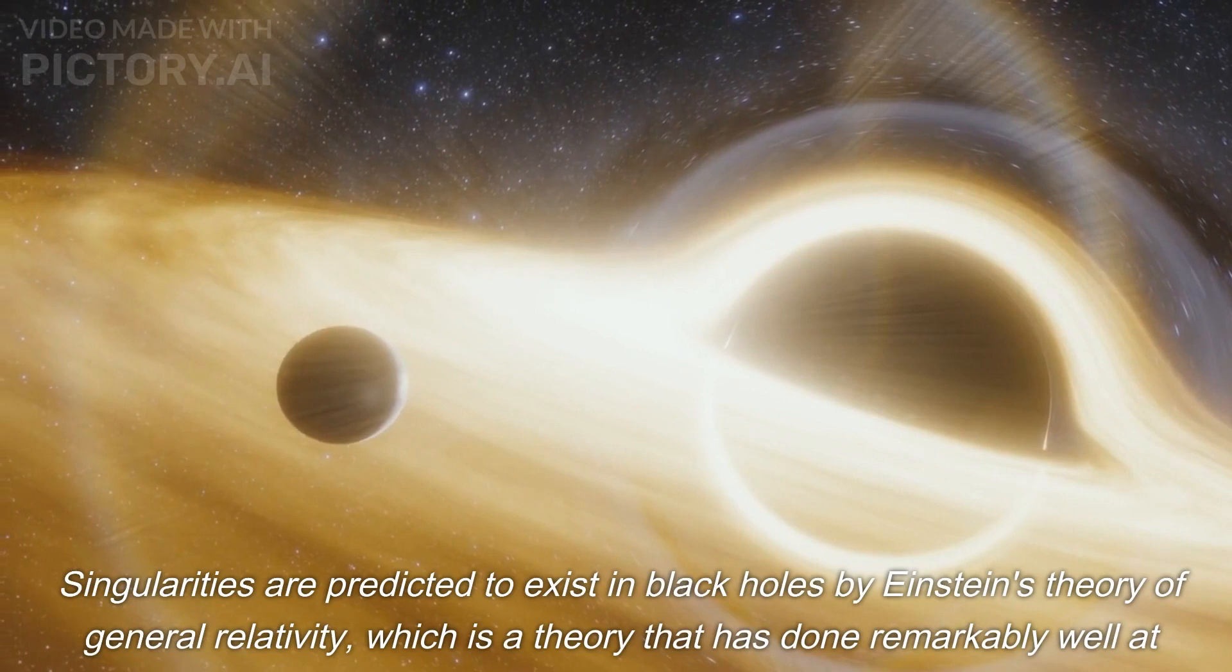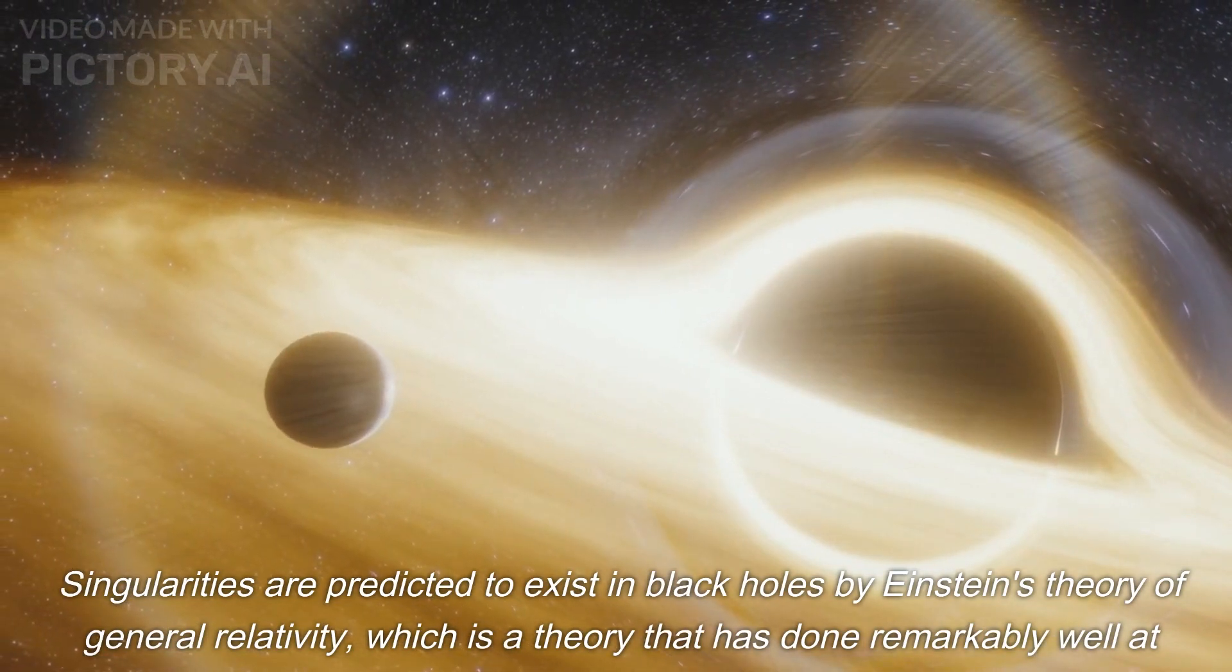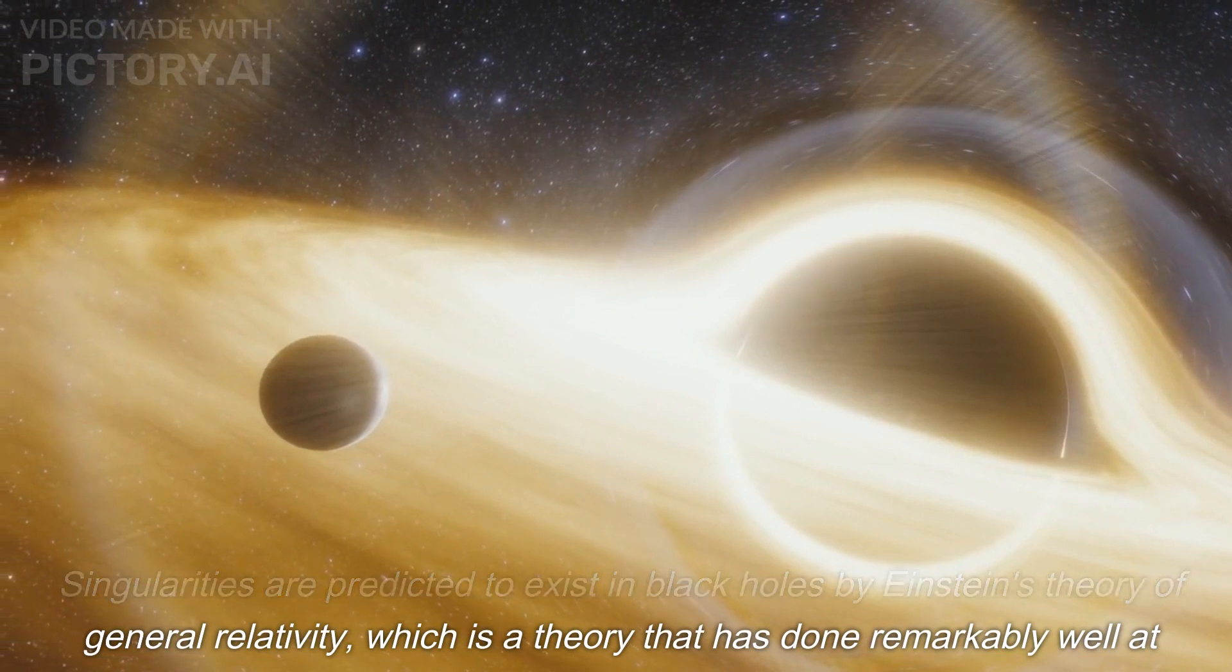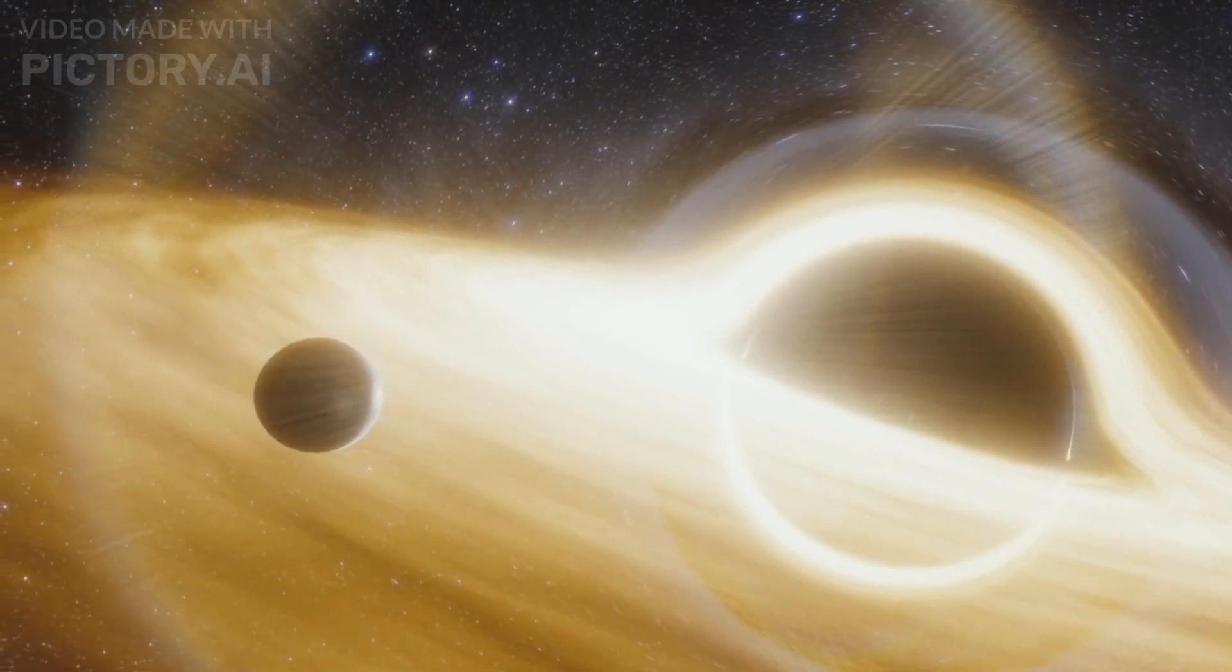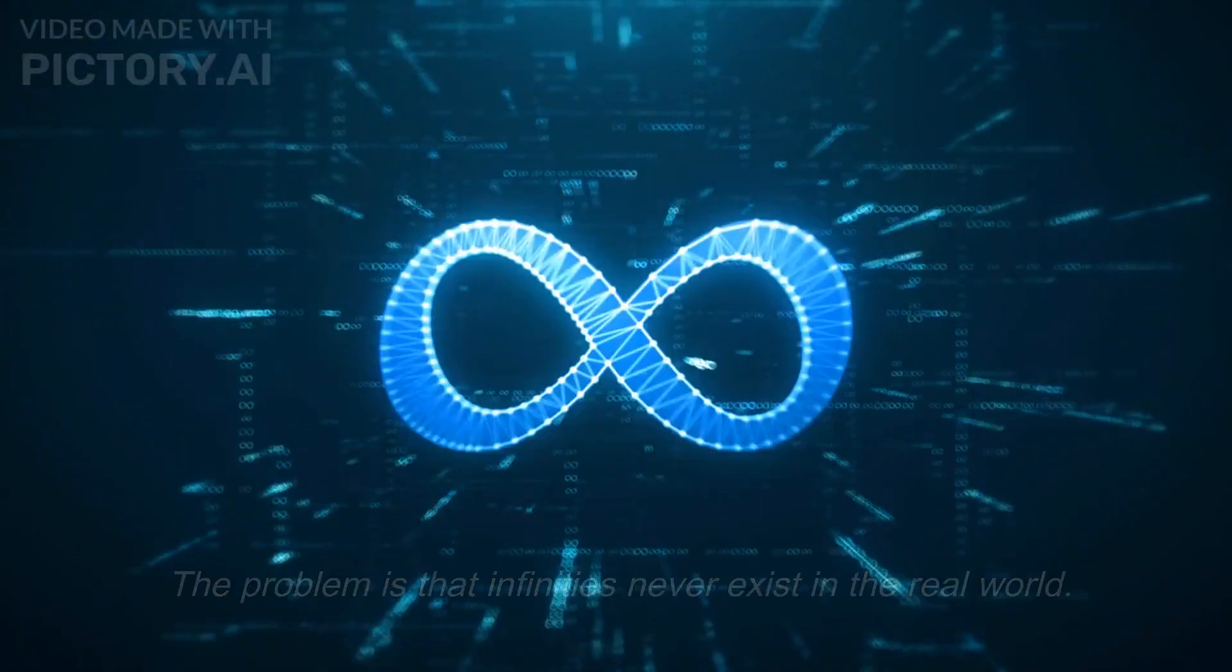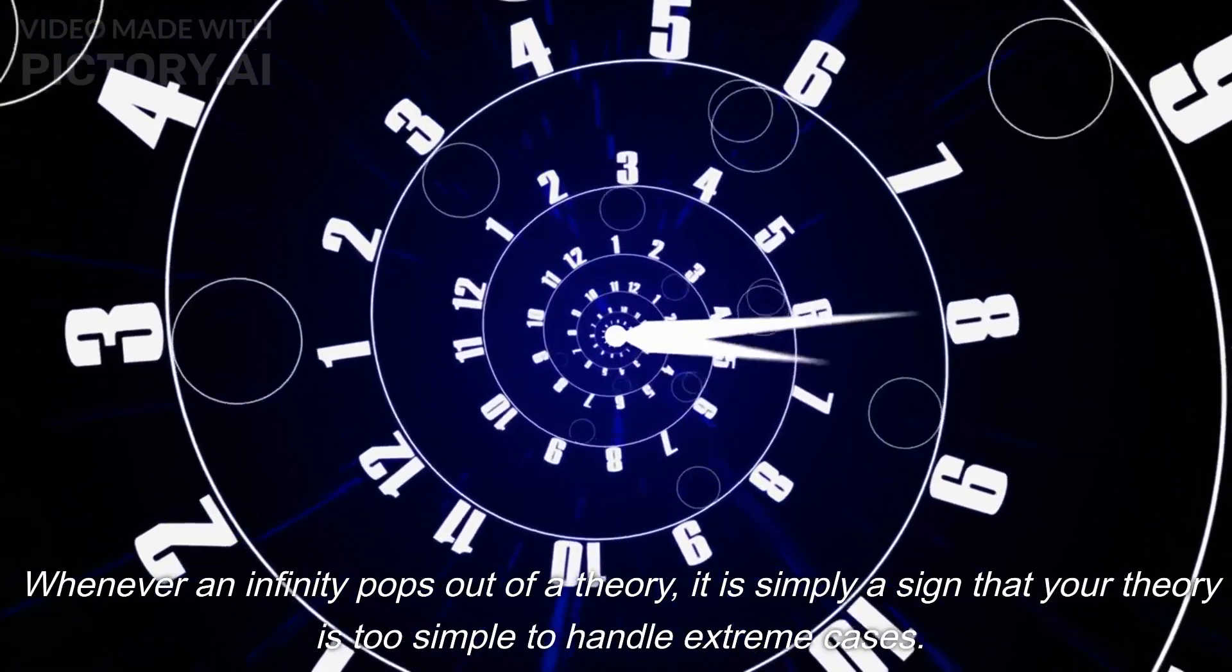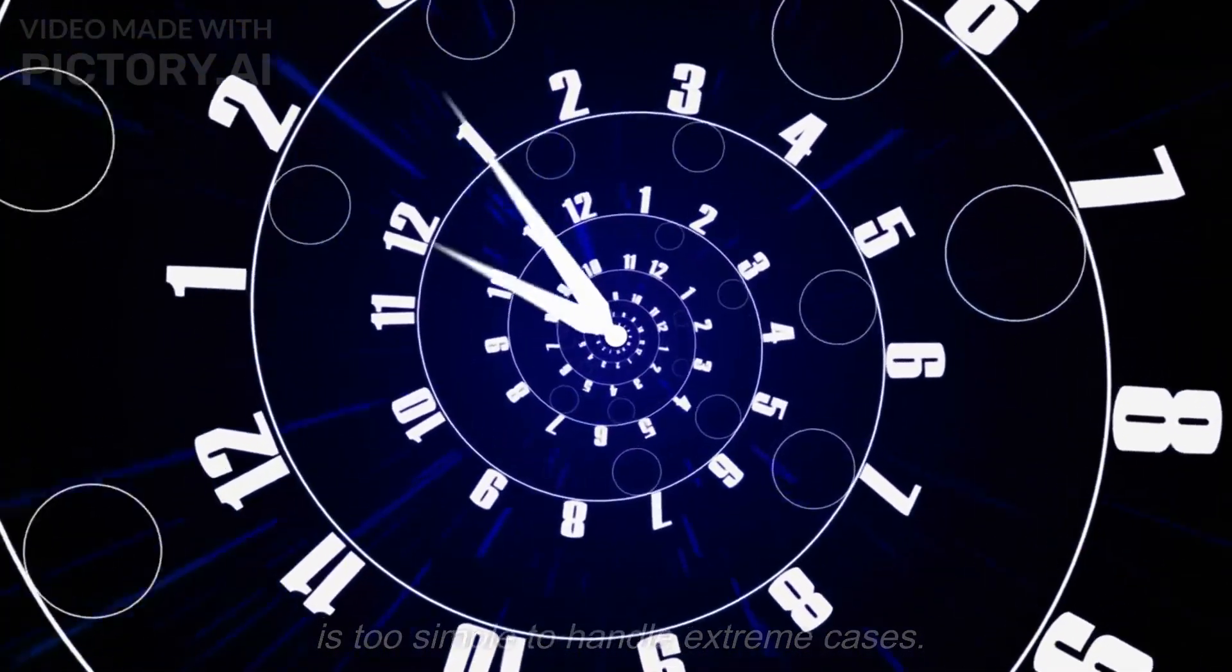Singularities are predicted to exist in black holes by Einstein's theory of general relativity, which is a theory that has done remarkably well at matching experimental results. The problem is that infinities never exist in the real world. Whenever an infinity pops out of a theory, it is simply a sign that your theory is too simple to handle extreme cases.